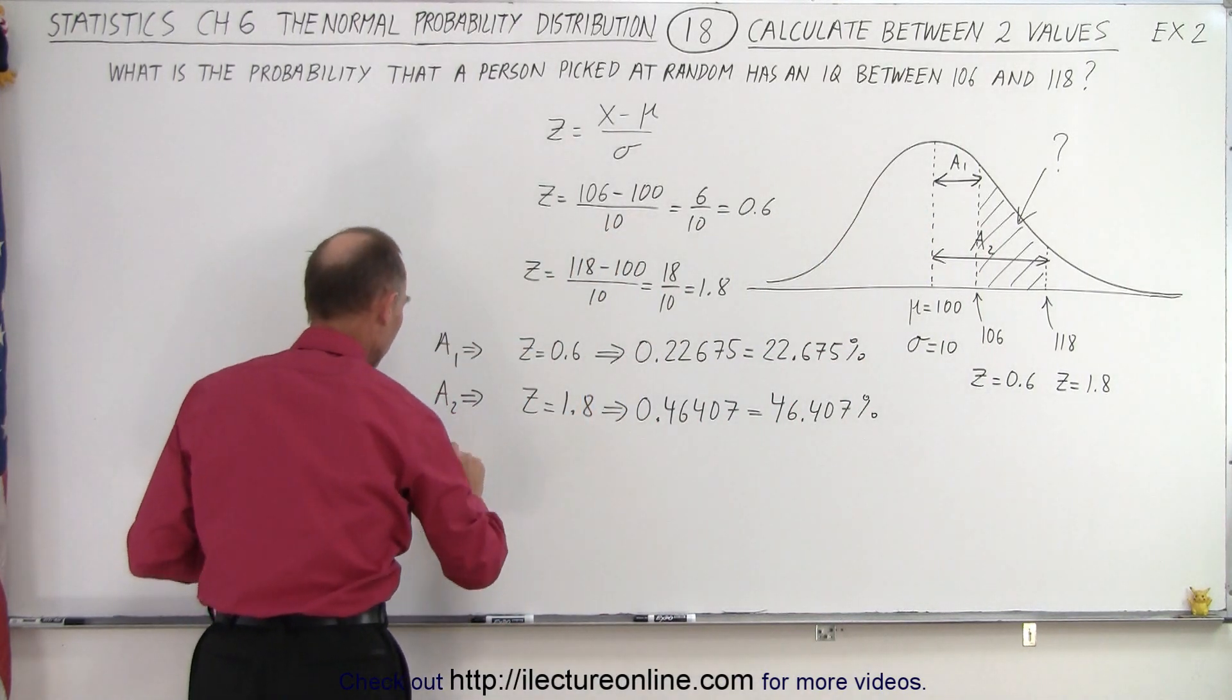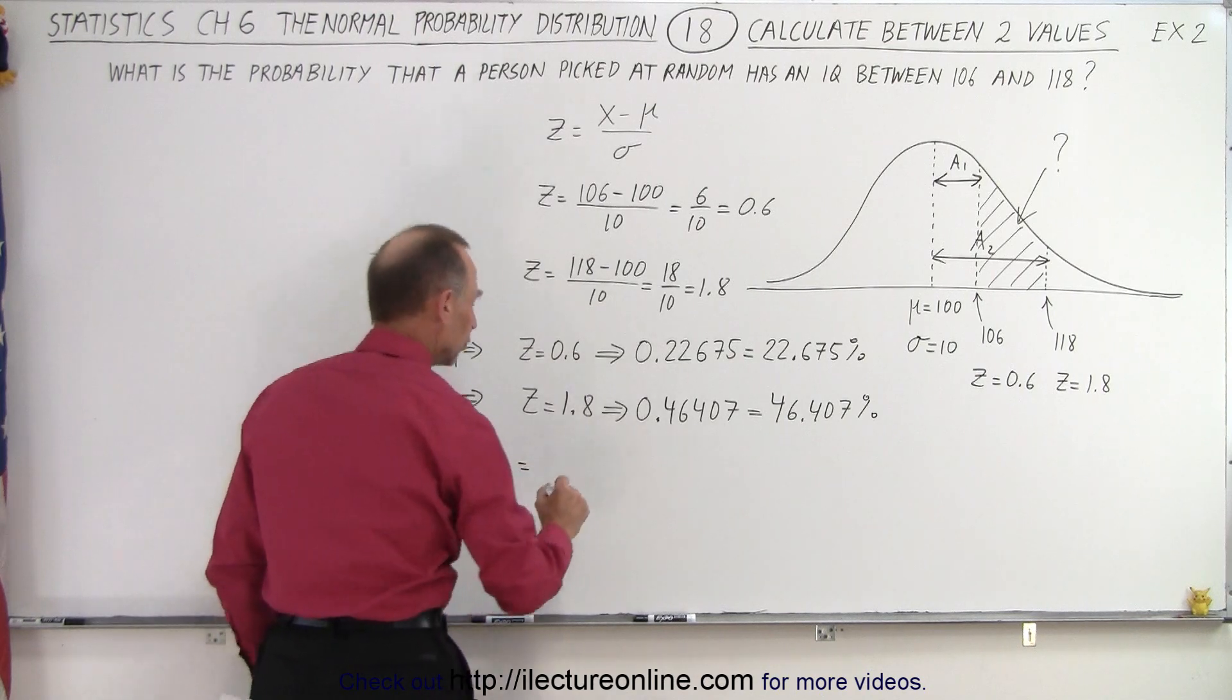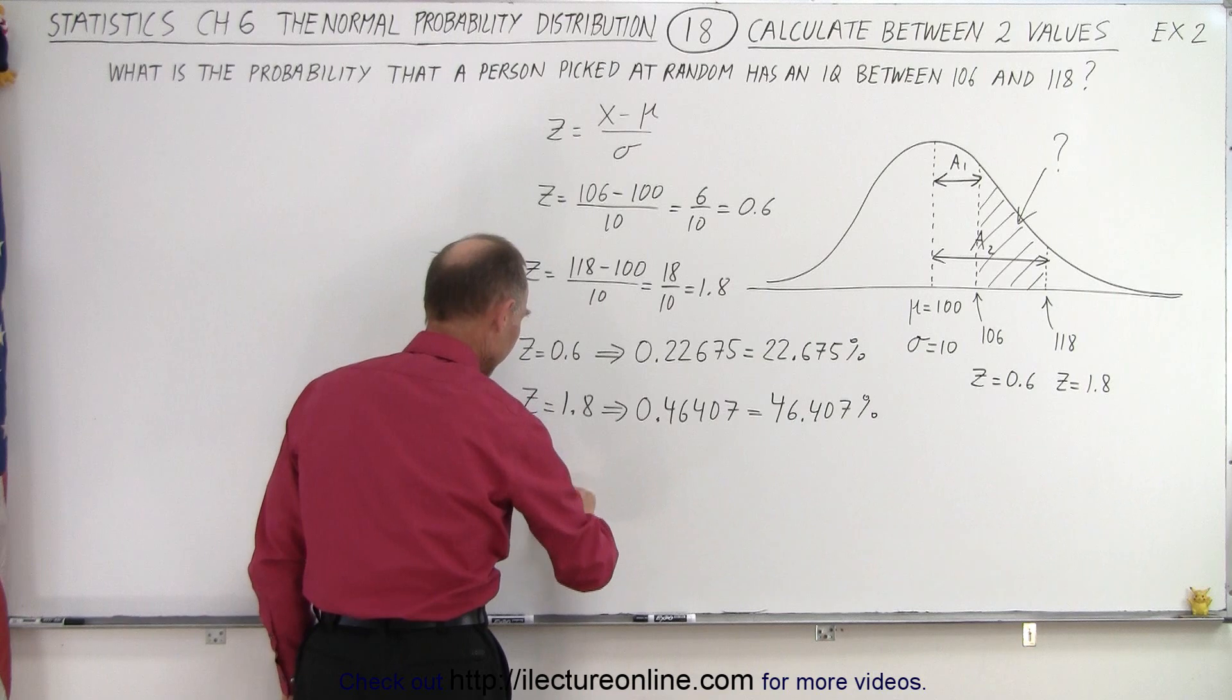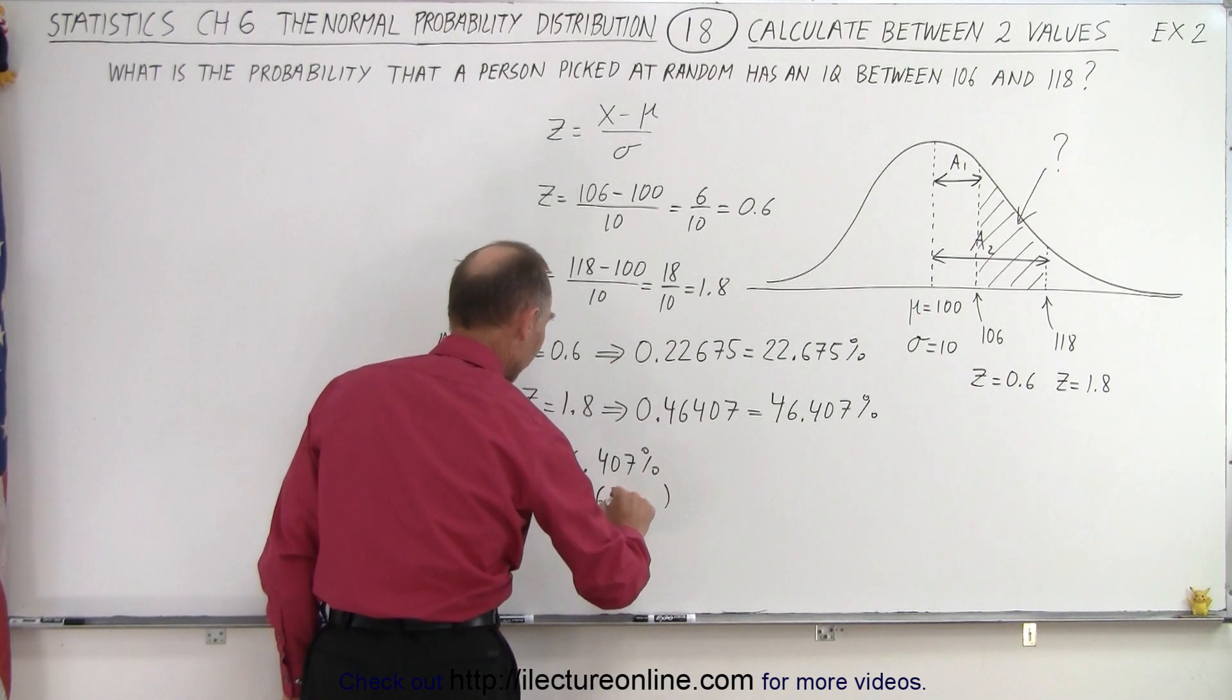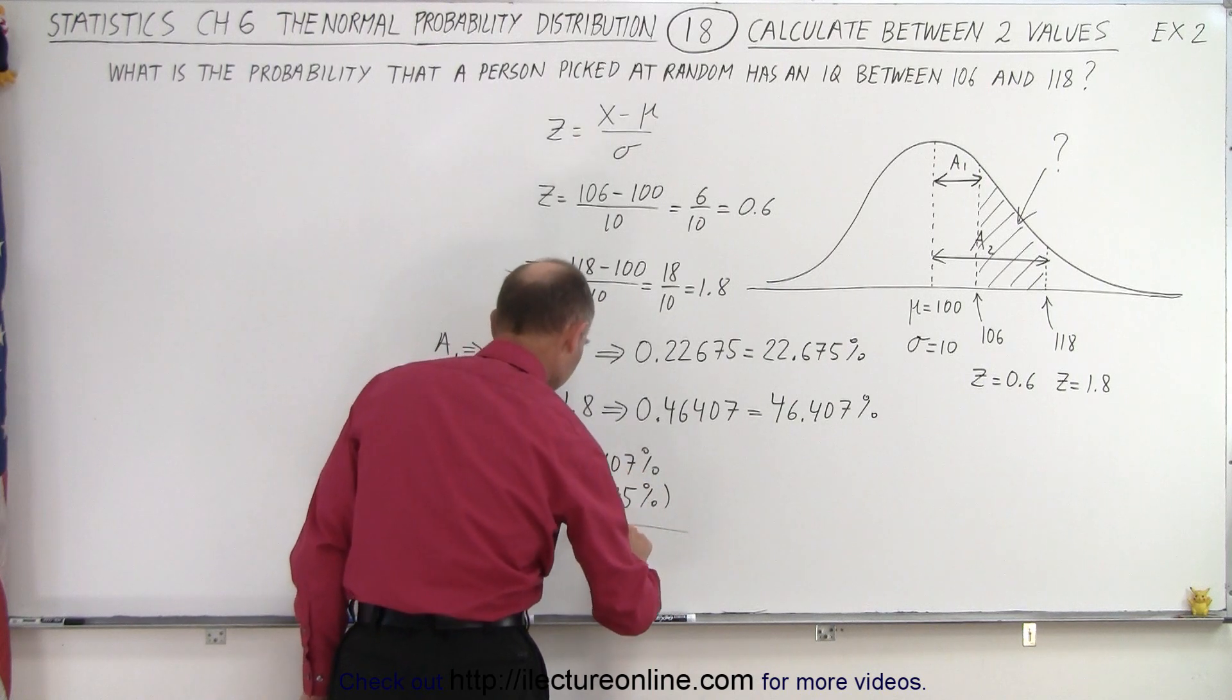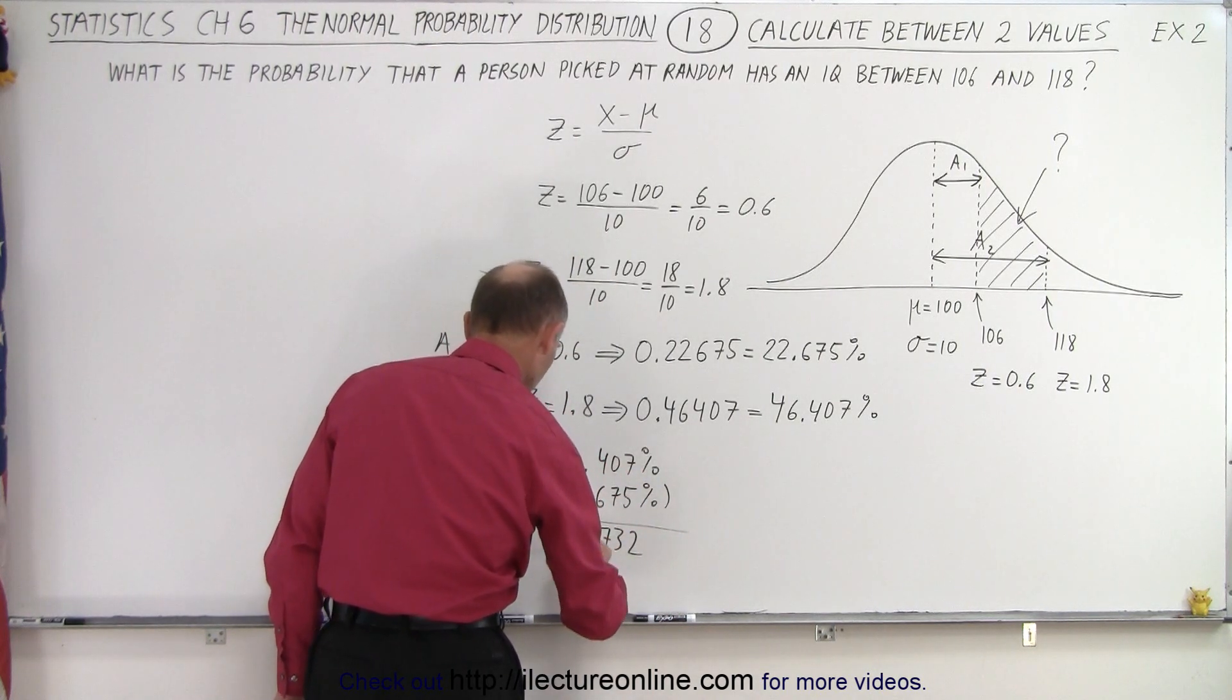So in this case we take A2 minus A1 which is equal to, A2 is 46.407 percent and we subtract from that 22.675 percent. And so we have 7 minus 5 is 2, 10 minus 7 is 3, 13 minus 6 is 7, 5 minus 2 is 3, 4 minus 2 is 2.